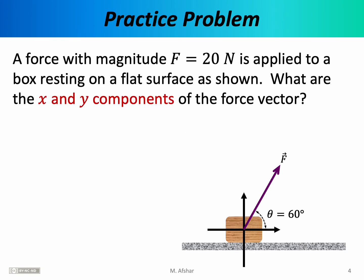Here is a simple practice problem that will serve as a warm-up for dealing with rotated coordinate systems. A force with a magnitude of 20 newtons is applied to a box resting on a flat surface as shown. What are the x and y components of the force vector? For now, just imagine a box sitting on a perfectly horizontal floor, and somebody is pulling this box in the direction indicated. The force has a magnitude of 20 newtons, and is applied at an angle of 60 degrees relative to the horizontal.